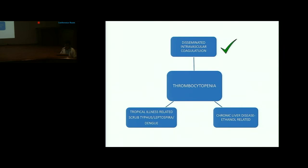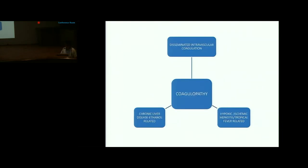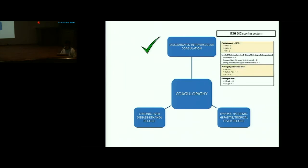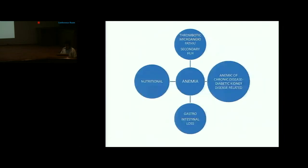Chronic liver disease was considered but ultrasound showed no surface nodularity or raised echotexture. Coagulopathy was attributed to DIC as both PT and aPTT were raised; however, due to lack of fibrinogen and D-dimer levels, overt DIC could not be confirmed by ISTH scoring. Anemia was likely multifactorial — anemia of chronic disease, nutritional causes, GI loss due to chronic liver disease, or TMA. A rare possibility of diffuse alveolar hemorrhage was also mentioned.